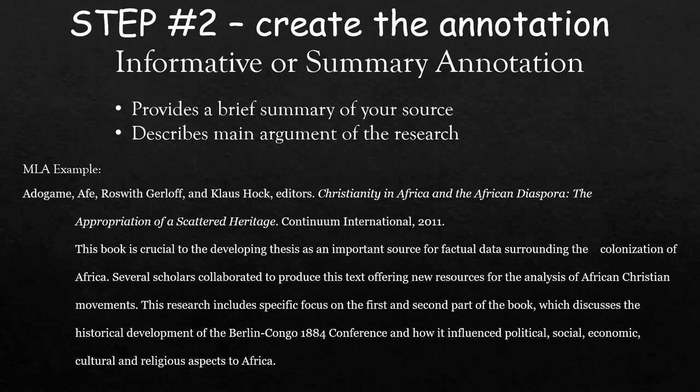Now that step one is completed and the credibility of all your sources is established, it's time to move on to step two: creating the annotation. There are about four different types of annotation, but you'll probably end up using the combination annotation. The first type is informative or summary, which provides a summary of the source and discusses the main argument of the research.